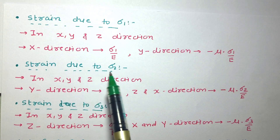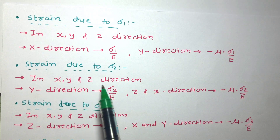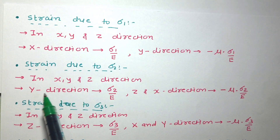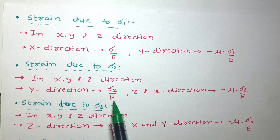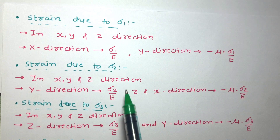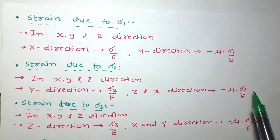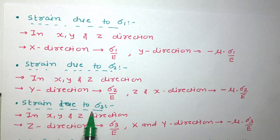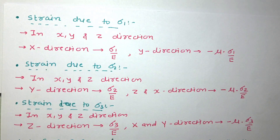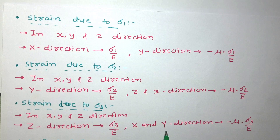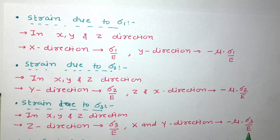Now, strain produced by sigma 2: it produces stress in all three directions. In the y-direction it produces linear strain equal to sigma 2 upon E, and in the x and z directions it produces lateral strain equal to minus mu into sigma 2 upon E. Similarly, strain produced by sigma 3: in the z-direction it produces linear strain equal to sigma 3 upon E, and in the x and y directions it produces lateral strain equal to minus mu into sigma 3 upon E.